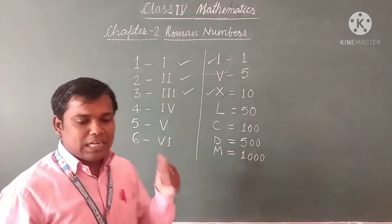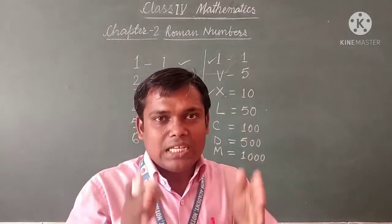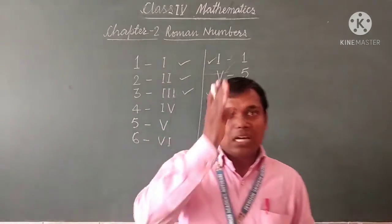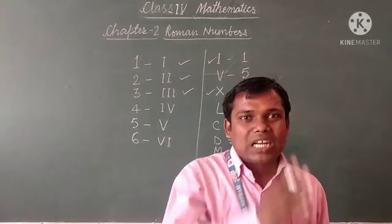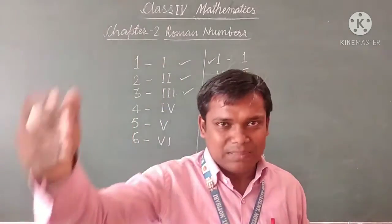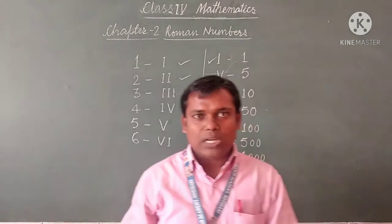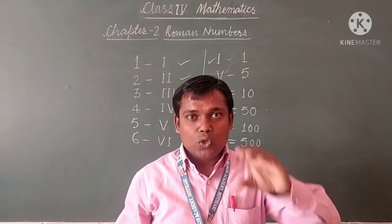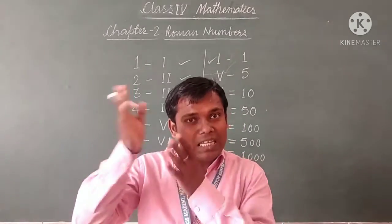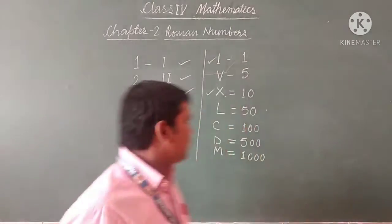Now the second rule is: if we write a symbol to the right of a greater value symbol, it means we are going to add the symbols. And if we write a symbol of smaller value before a greater value symbol, then we subtract.